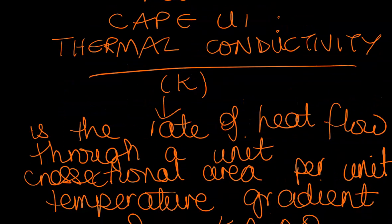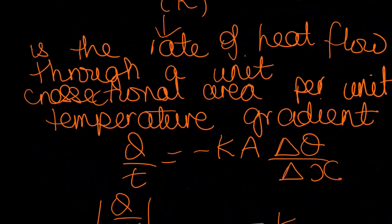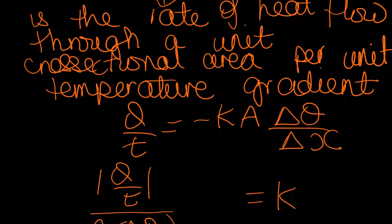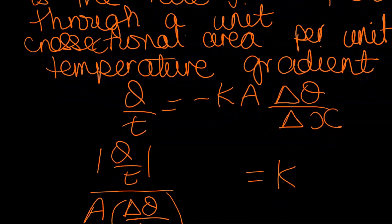So here we're going to look firstly at the definition and it is defined in terms of this equation. We say that thermal conductivity is the rate of heat flow through a unit cross-sectional area per unit temperature gradient. And we use the equation Q over t is minus KA delta theta over delta x.